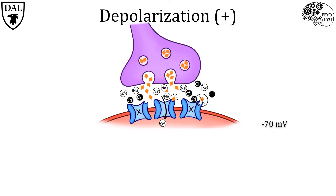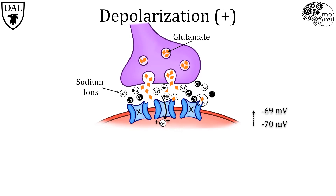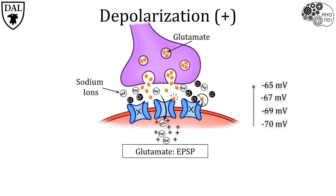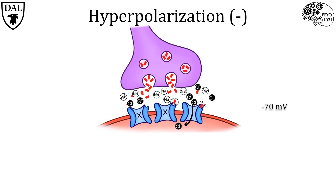First let's look at depolarization. A neurotransmitter that is always excitatory at the synapse is glutamate — the orange diamonds represent glutamate molecules and the white circles represent sodium ions. When glutamate binds to its receptor, the channels open and sodium ions are driven by their electrochemical gradient to enter the neuron. Sodium brings its positive charge into the cell, making the cell more positive, which is called a depolarization. If the channel remains open for longer, more sodium flows in, making the cell even more positive. This type of graded potential is called an excitatory post-synaptic potential, or EPSP for short.